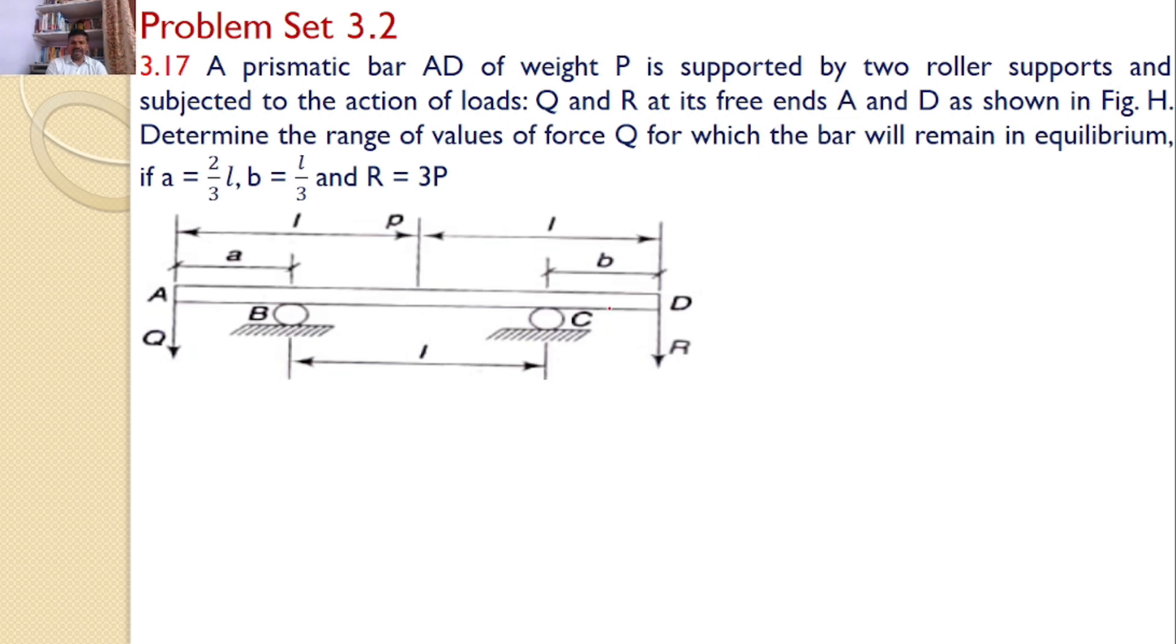The bar AD is supported by two roller supports B and C. We would like to see that the bar will remain in equilibrium without these supports. That means these reactions are not required to keep the body in equilibrium.